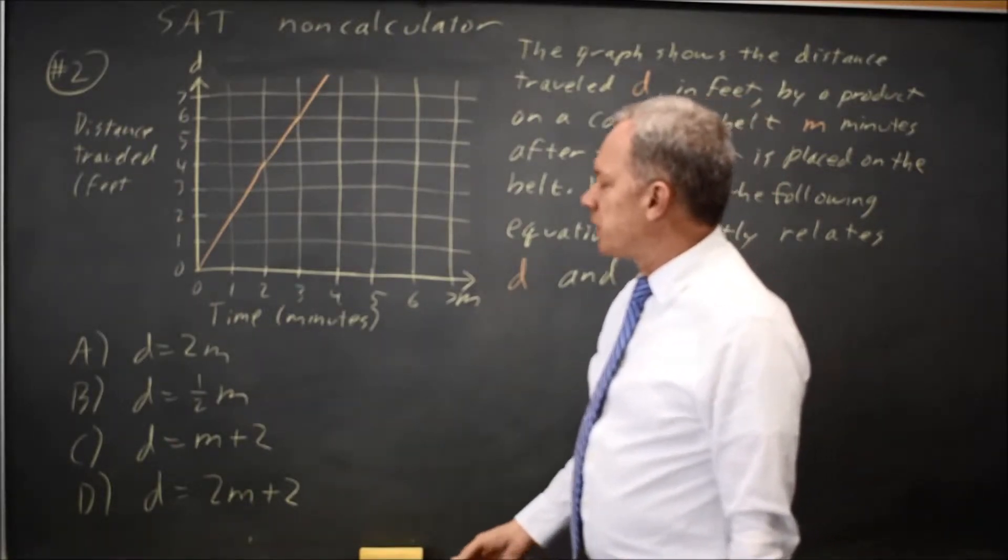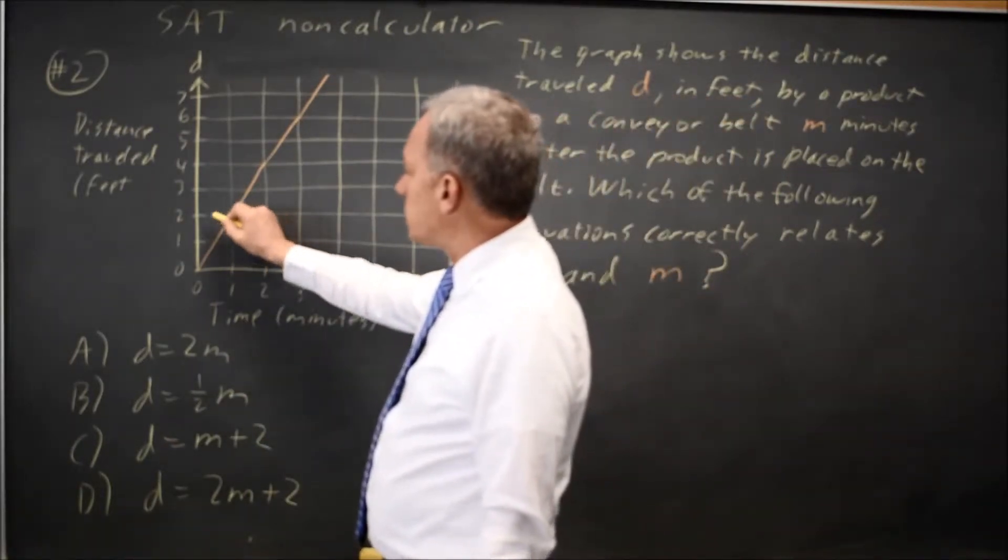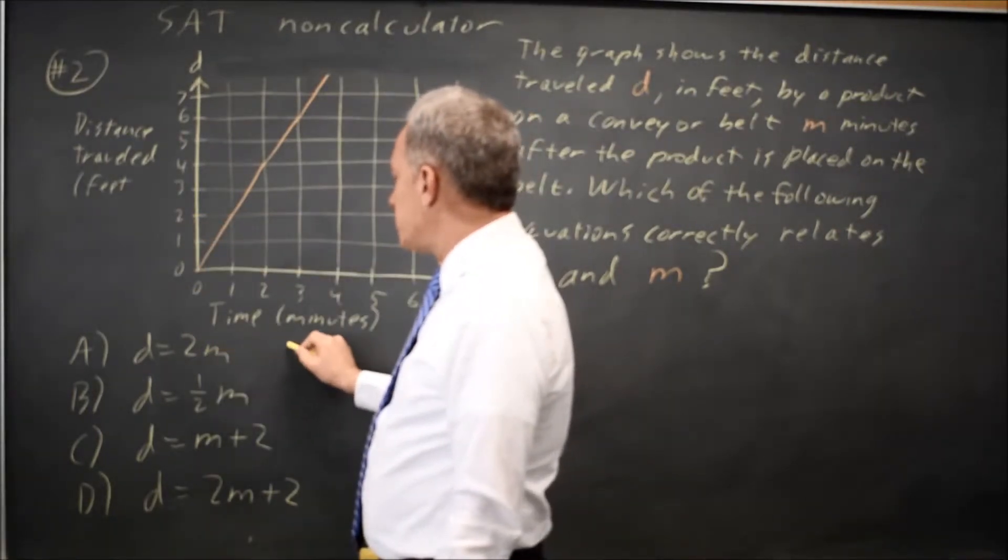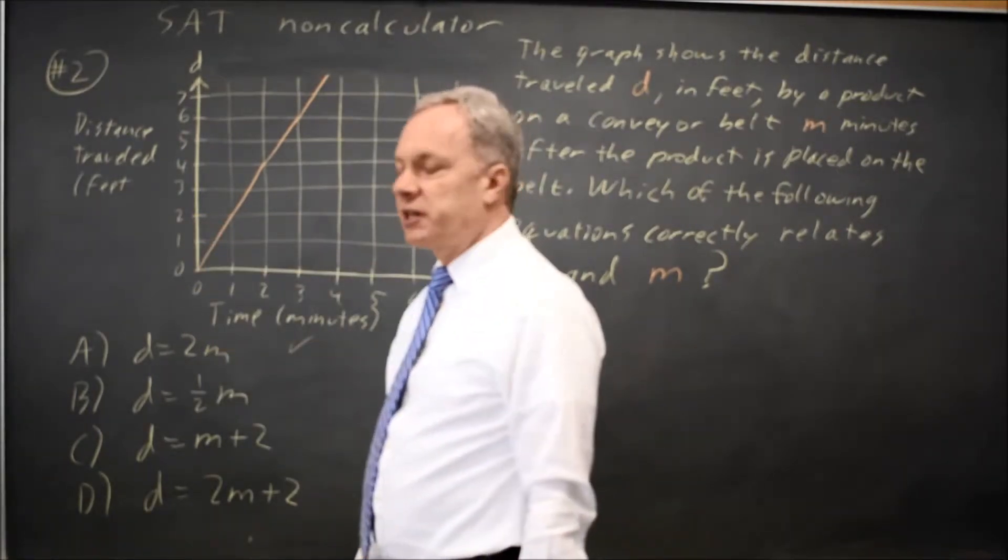I like to substitute in a particular value. If M equals 1, D is supposed to be 2. That works for choice A, which does not necessarily mean this is the right answer.